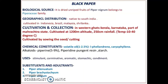Black pepper is used as a stimulant, carminative, aromatic, stomachic, and in condiments. Substitutes and adulterants of black pepper are Piper attenuatum, Piper brachystachyum, and Piper longum.